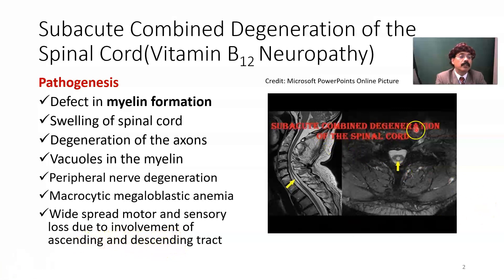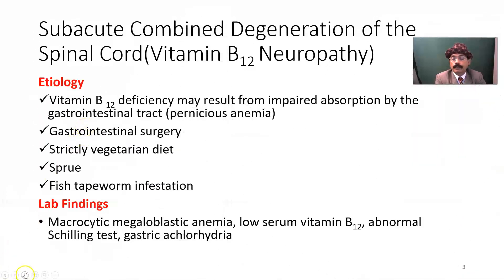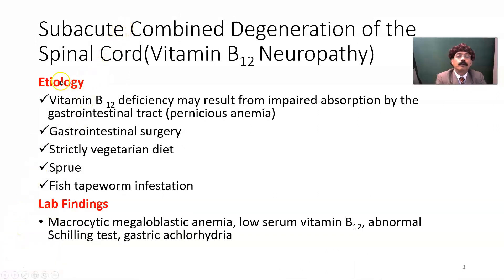In this physical image, we are seeing the subacute combined degeneration of the spinal cord. It may extend up or go down. Here is another section of the subacute combined degeneration of the spinal cord posterior column. The lateral white part of the spinal cord is affected, and it is caused by vitamin B12 deficiency.